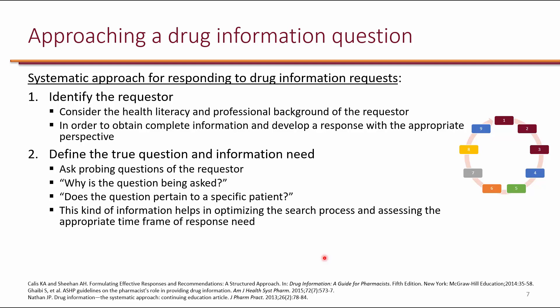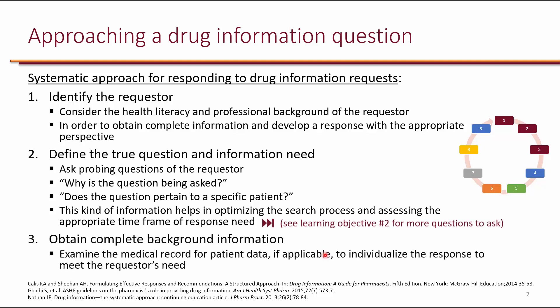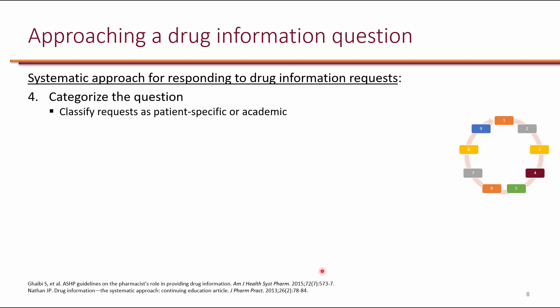For example, we can decide how quickly we need to find the information and respond to the requester. If there's a patient waiting, we need to respond very quickly, whereas if the question is for making policies for an institution, an immediate response might not be necessary — a more thorough response might be more appropriate. See learning objective number two for more questions to ask. Step number three is to obtain complete background information. You can examine the patient's medical record if, for example, you work in a setting where you have access to patient charts, though this might be more challenging in a community setting.